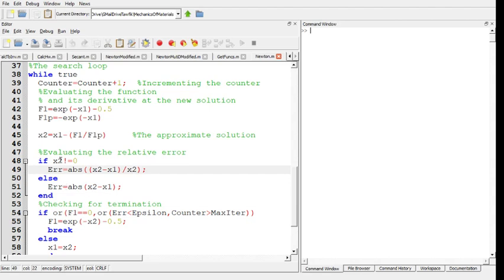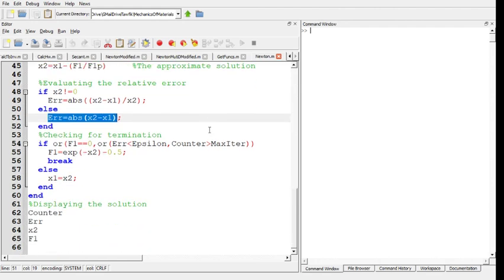If you are unlucky and x2 is equal to zero, then the error is measured by the difference between the two values. This usually doesn't happen and I don't have to put a lot of load on it right now.